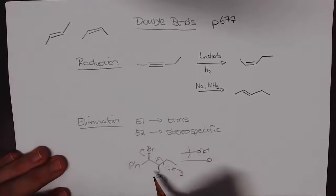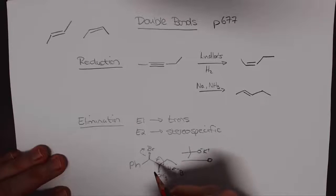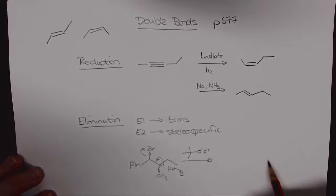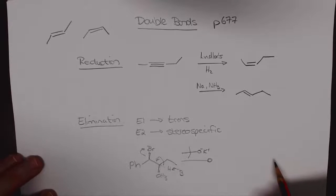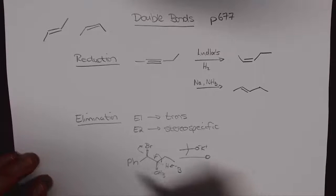What happens in an E2 elimination is the base picks up the proton and we get a pi bond being formed and the bromine leaving. The most important thing with this reaction though was that the reaction is in a one-step process and the proton and the bromine have to be anti periplanar to each other and that controls the stereochemistry of the product, the geometry of the double bond.